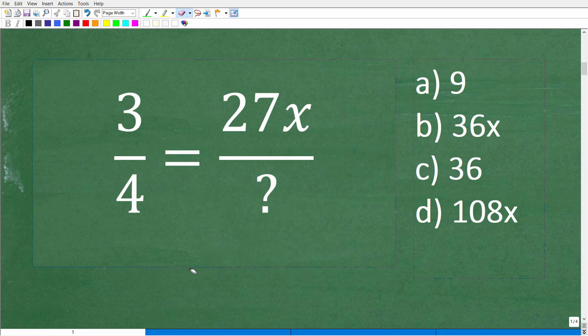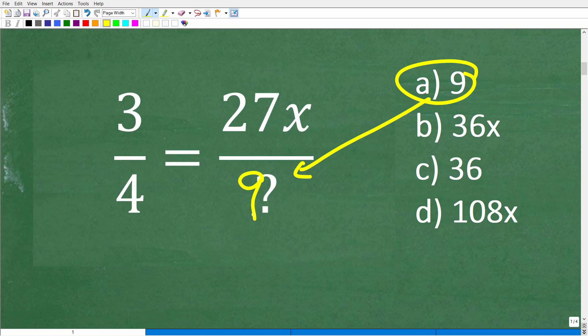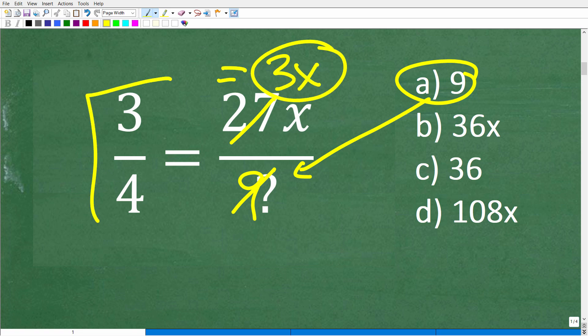There's a couple different ways we can think about it. If we plugged in nine into our denominator and check this work, we're going to get 27x over nine. Well, nine goes into 27 three times, so this will be 3x. Is 3x equal to three-fourths? It doesn't appear so. You could just use some common sense here.